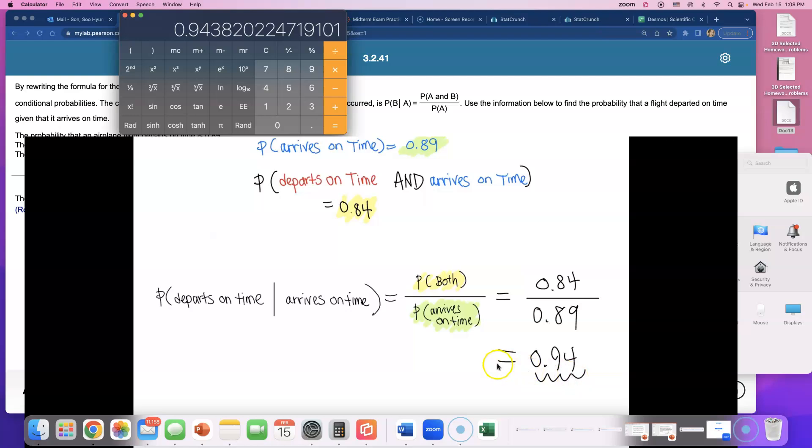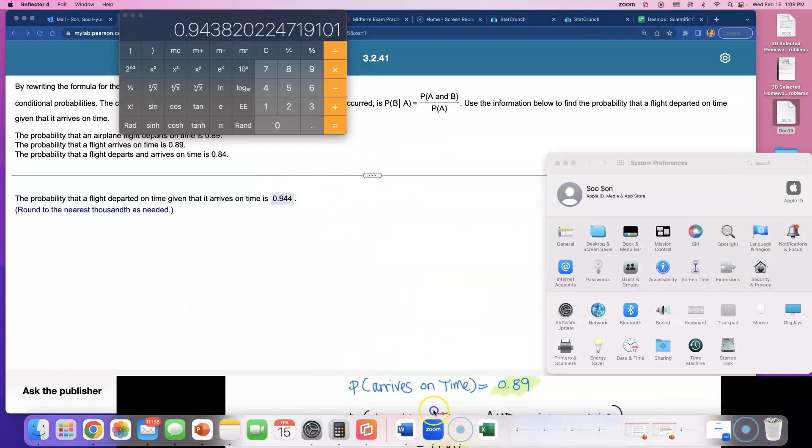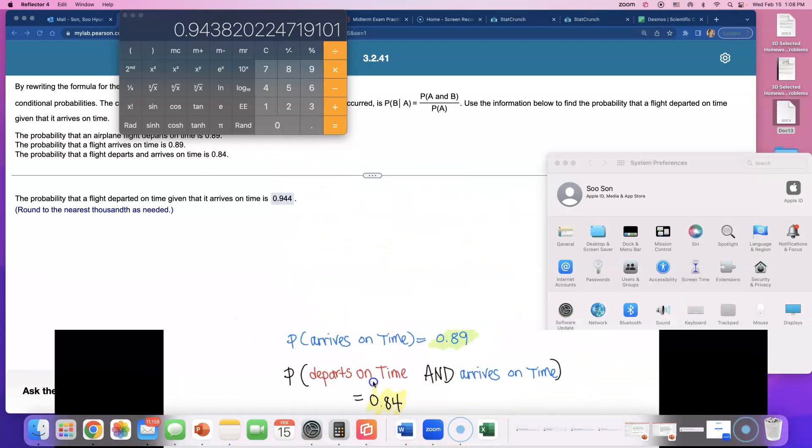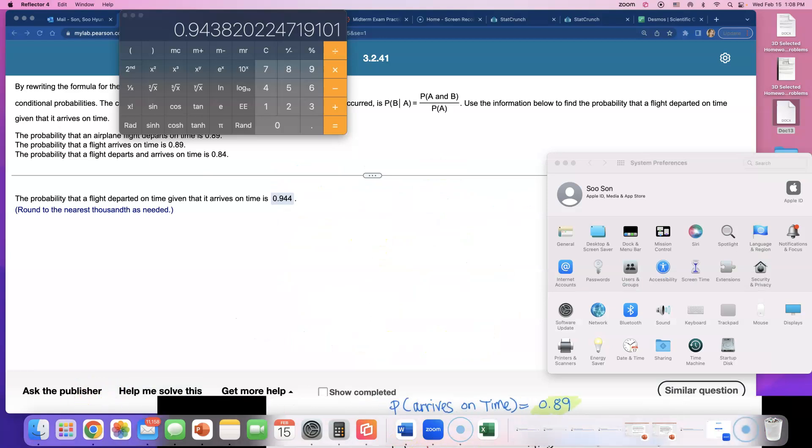So given that this plane arrived on time, we have a 94% chance this plane will depart on time. So if the plane doesn't arrive on time, I guess that will be lower, right? So that's how you can find that number, 0.944.